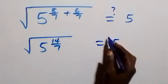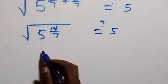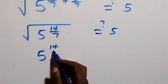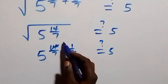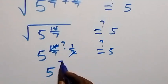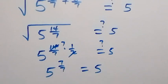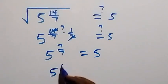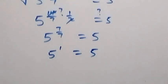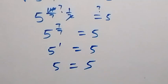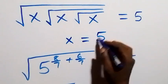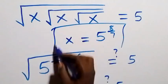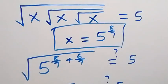Changing the square root to raised to power half, we have 5 raised to power 14 over 7 times half, equals 5. Here 14 over 7 times one half gives 7 over 7, so we have 5 raised to power 7 over 7, equals 5. And 7 over 7 is 1, so 5 raised to power 1 equals 5. Left-hand side equals right-hand side, and hence the solution x equals 5 raised to power 8 over 7 satisfies this given problem.